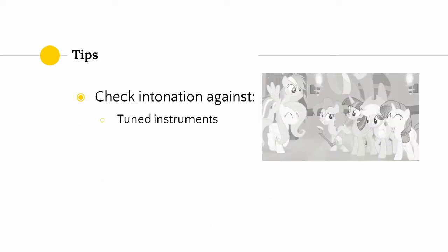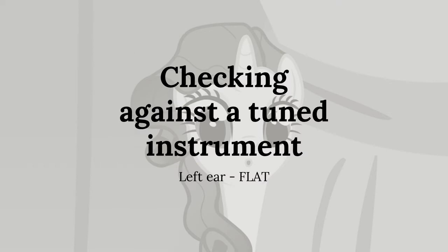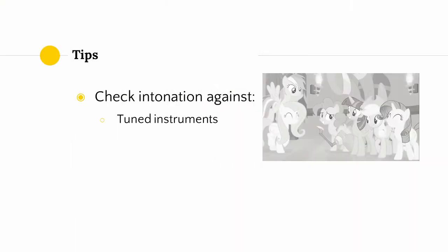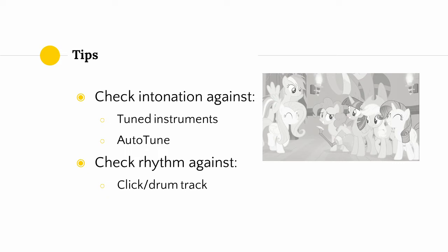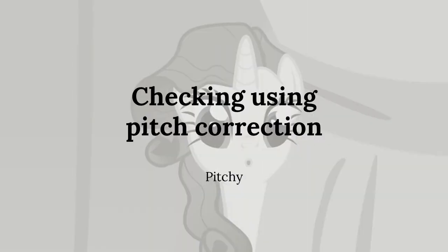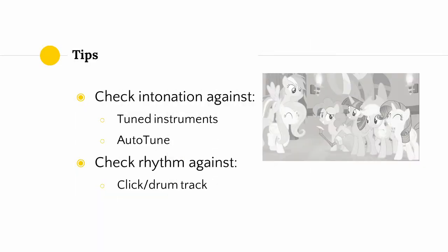Here are some tips for people who are recording vocals or instrumental tracks. When checking your intonation, it may help to check against a tuned instrument such as a synth, which essentially has perfect pitch, or against a real-world piano. Similarly, for vocalists, it can be helpful to check your intonation against an auto-tuned version of your own vocals — if your pitch is all over the place, auto-tune will capture that. Even if you are a pitch correction purist who believes auto-tune is for losers, auto-tune can still be useful for you. In terms of rhythm, the best thing to do is probably to check against a click track or against a drum track.